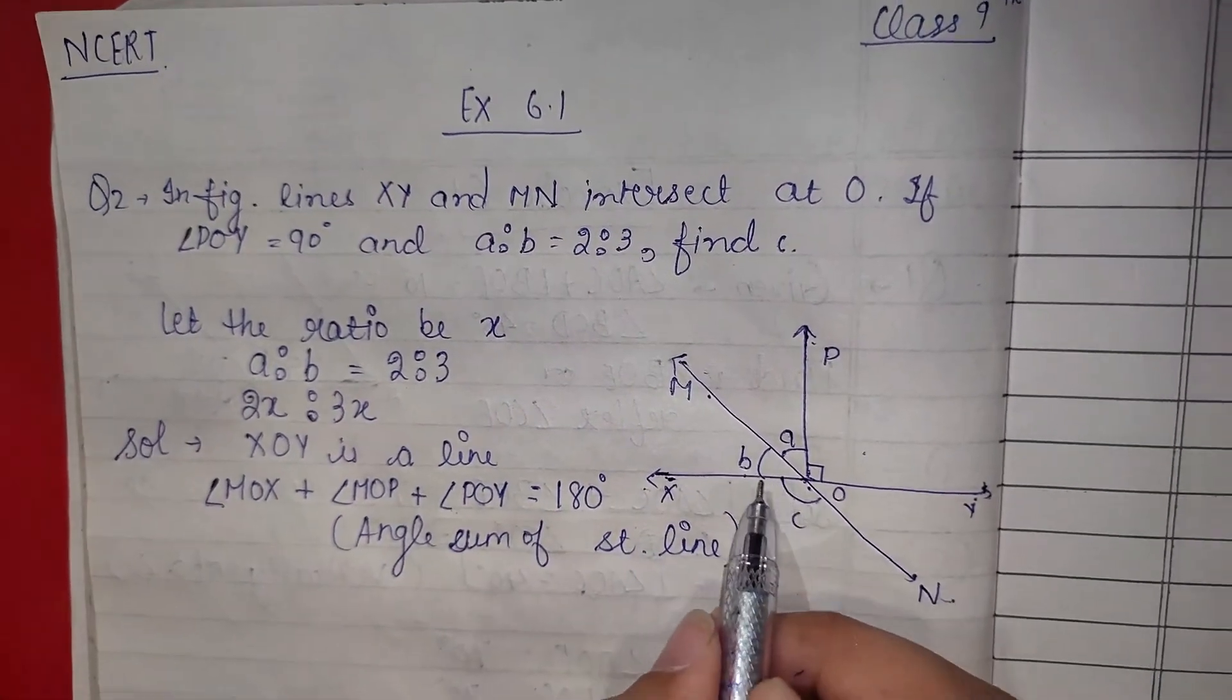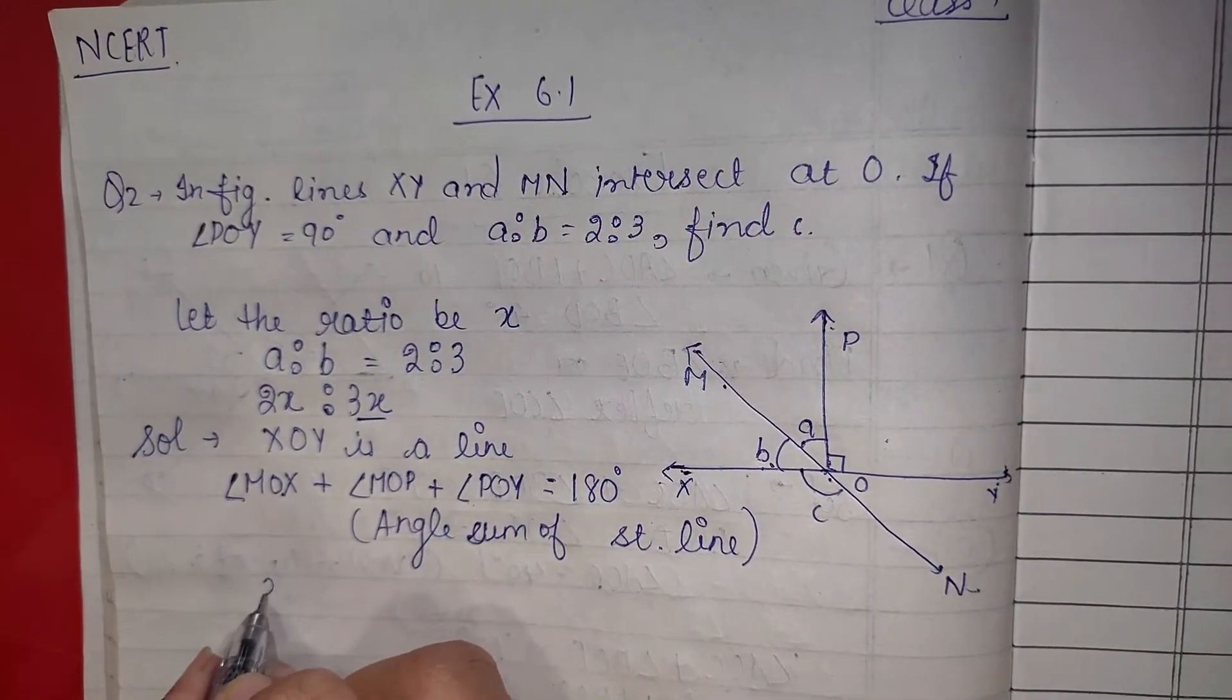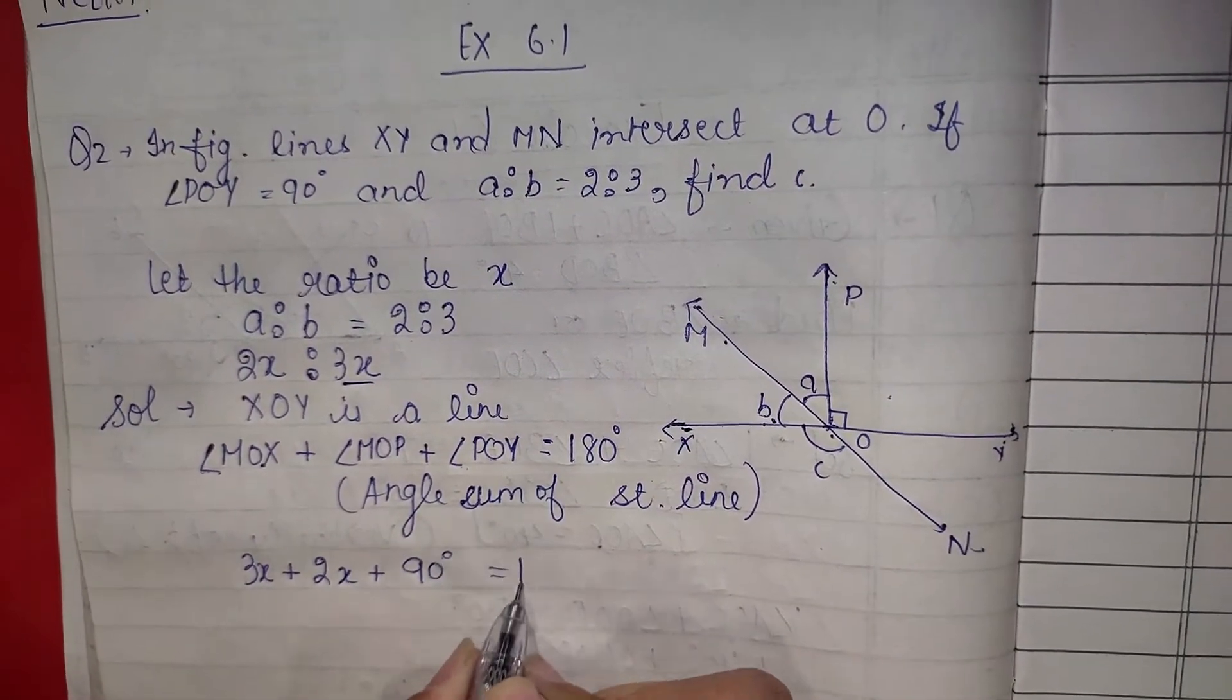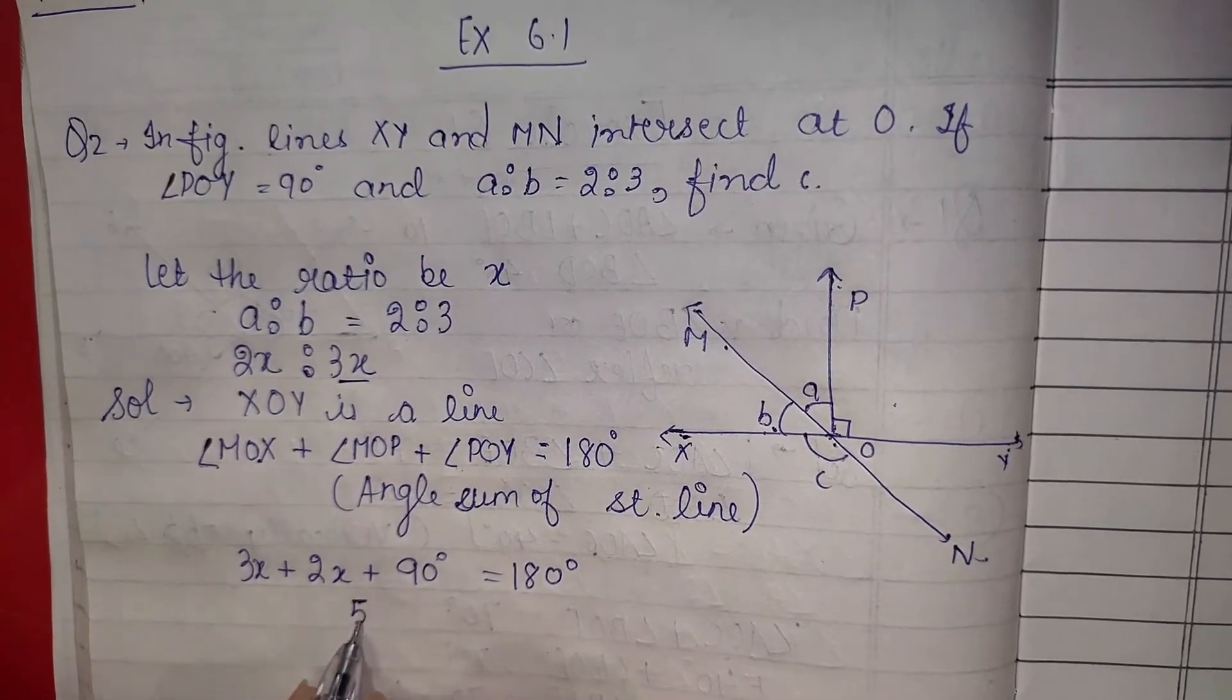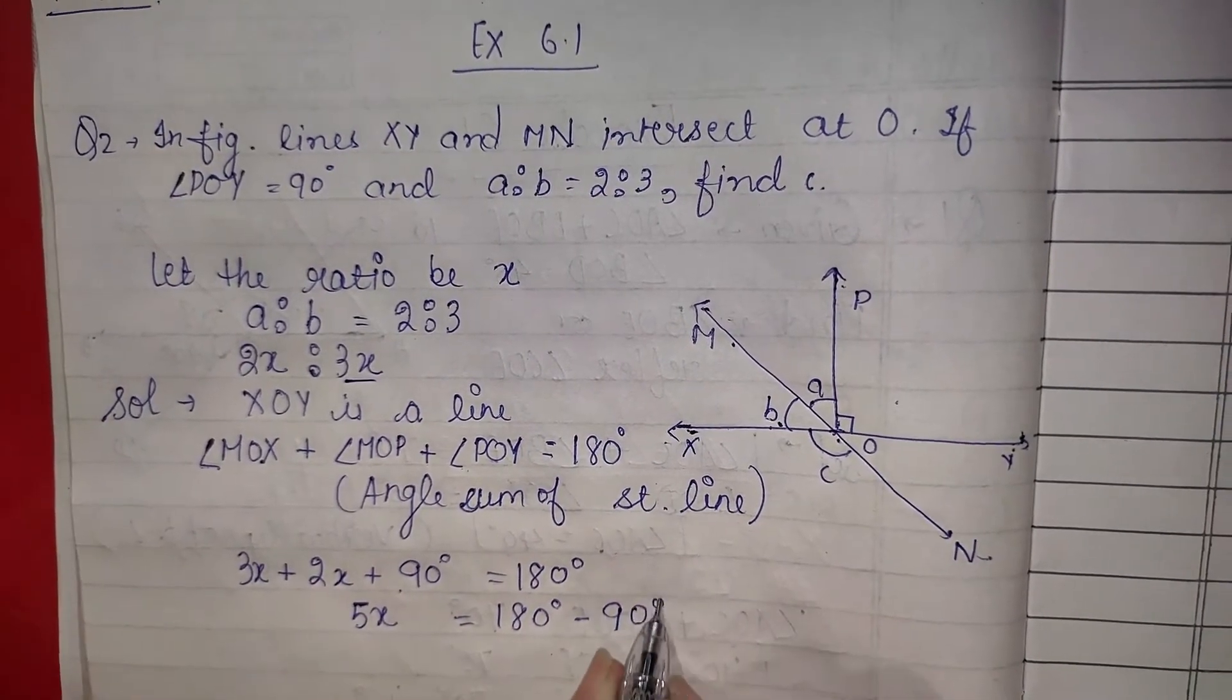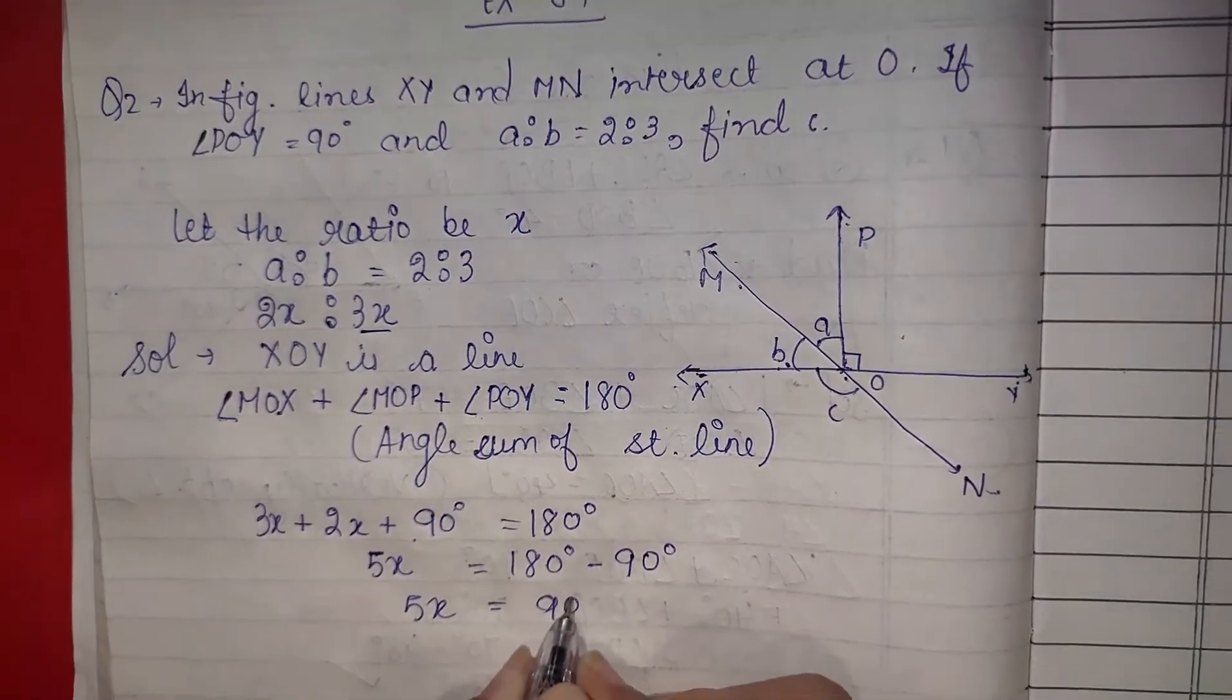So angle b we have 3x, 3x plus 2x plus 90 is equal to 180. 3x plus 2x is 5x. So 180 minus 90, here it will be 90 positive, here it will be negative. 5x is equal to 90.